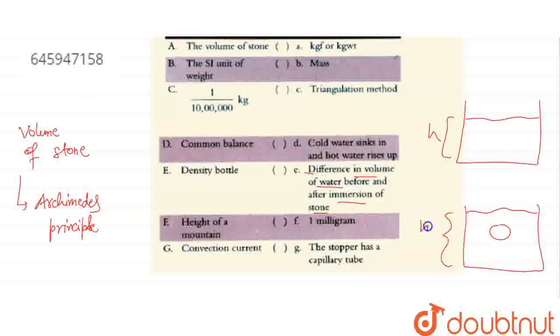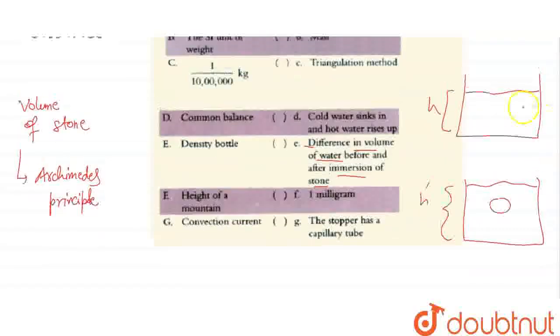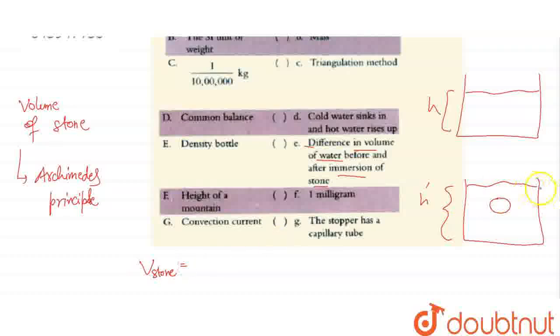So basically, what will be the volume of stone? The volume of stone will be the final volume minus initial volume. So if the area is A, the volume of stone is A times h' minus A times h. This is final minus initial, which will be the volume of stone.